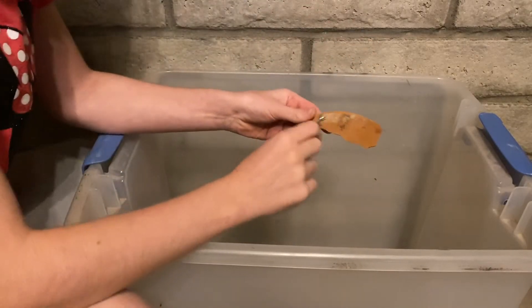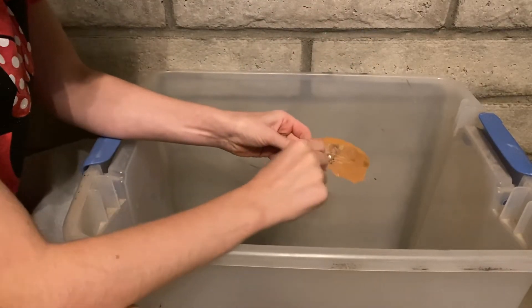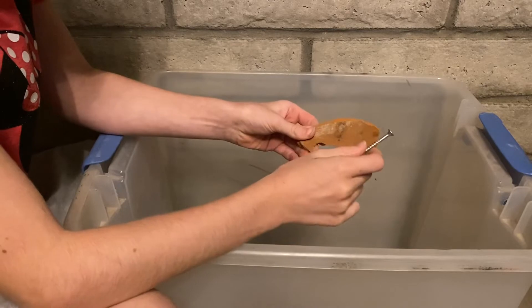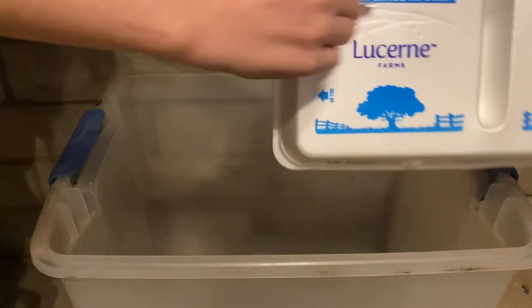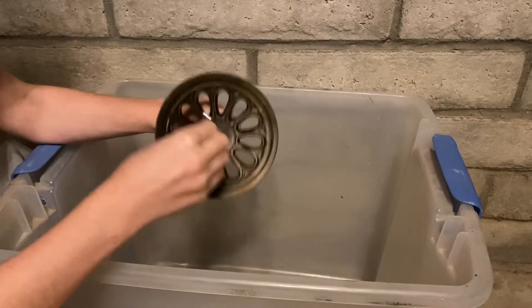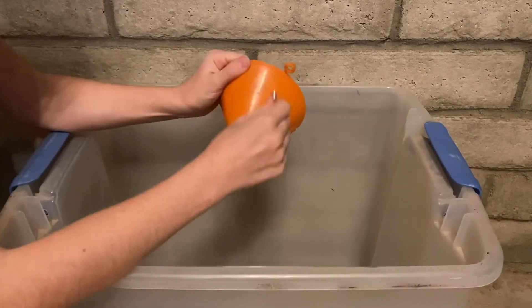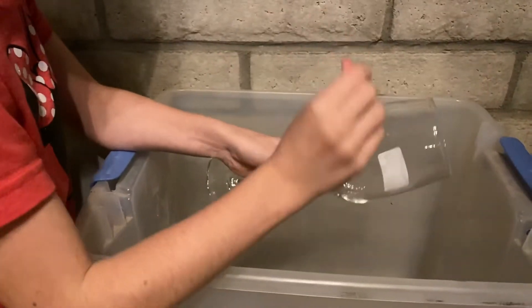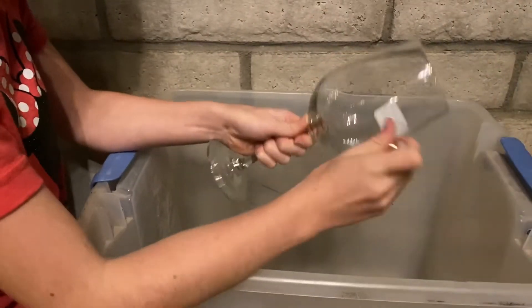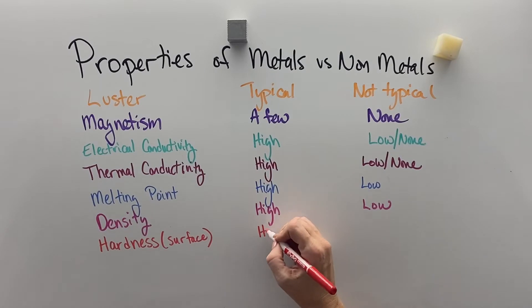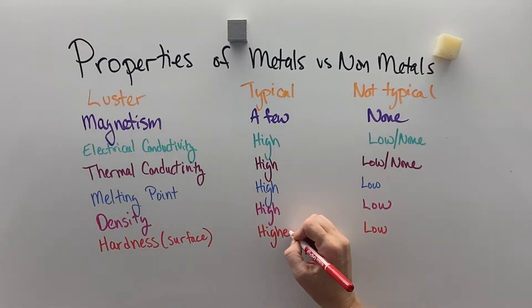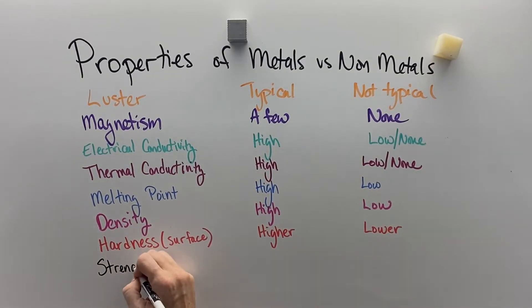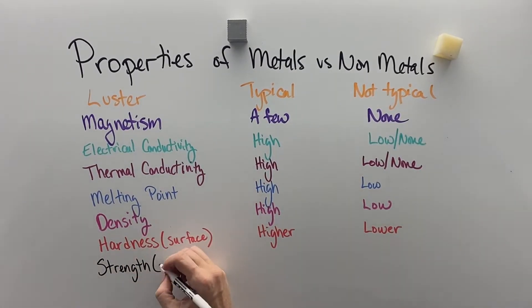Hardness of the surface is something that we can look at. Pottery is pretty hard, but styrofoam definitely isn't. This metal has a very high hardness. This plastic can be dinged up. This copper has a pretty scratchable surface as well, but this glass is pretty hard and can't be scratched up very easily. Typically, we consider metals to have higher surface hardness and non-metals to be lower.